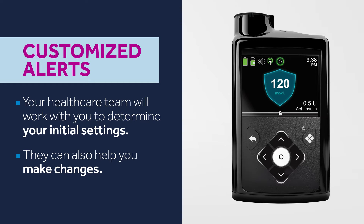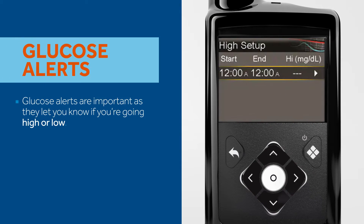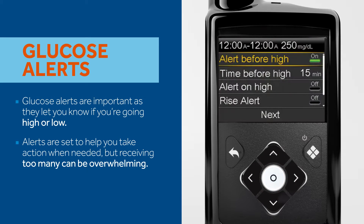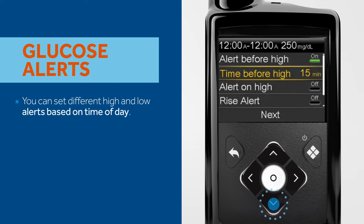Glucose alerts are important as they let you know if you're going high or low. Ideally, your alerts are set to help you take action when needed, but we understand receiving too many can be overwhelming. There are many different customization options you can try with the system.